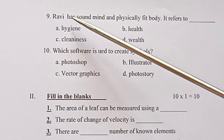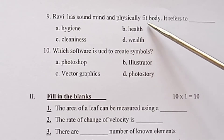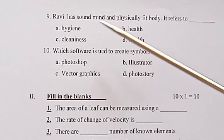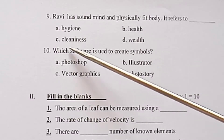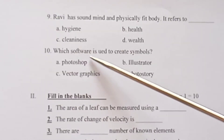Ninth question: Ravi has a sound mind and physically fit body. It refers to — A) Hygiene, B) Health, C) Cleanliness, D) Wealth.